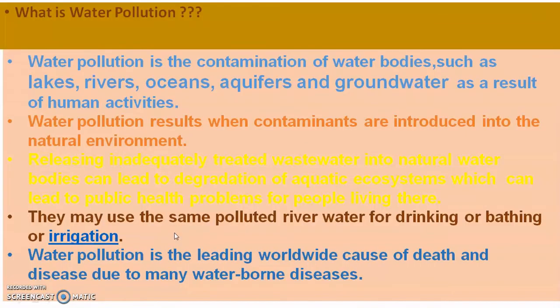First, we will see what is meant by water pollution. Water pollution is the contamination of water bodies such as lakes, rivers, oceans, aquifers, and groundwater due to many different types of human activities. All of these water bodies get contaminated with different components added by human activities, and this contamination is called water pollution.